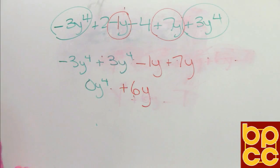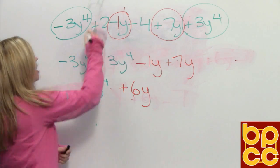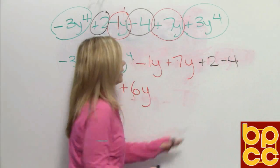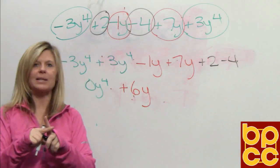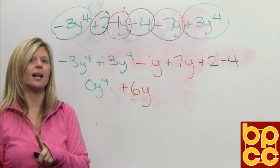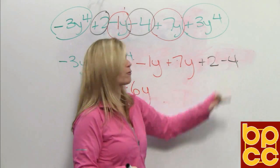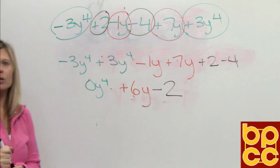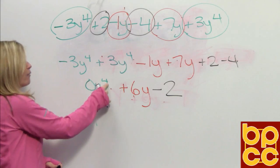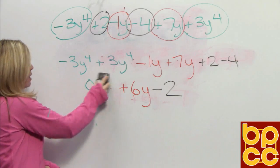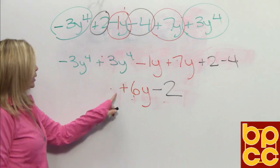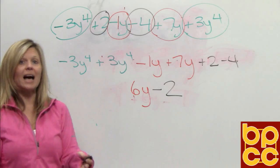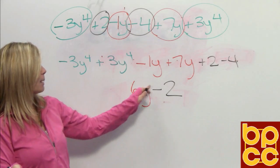But we're not done — we still have some more like terms. We have the constants: positive 2 and negative 4. Again, one is positive and one is negative, so with opposite signs you subtract and give the answer the sign of the larger. 4 take away 2 is 2, but because negative 4 is the bigger, the answer is negative 2. Just like we talked about, we don't write 0y to the 4th because that means there's none of them there. We don't need to write the positive in front of 6y because if it's leading and positive, it's understood. So when we collect like terms, our final answer is 6y minus 2, and that is in descending order because the variable should always come before the constant.